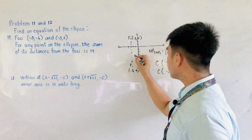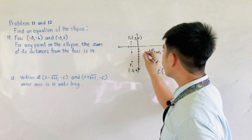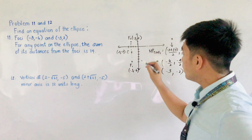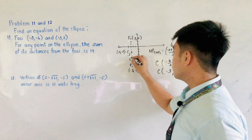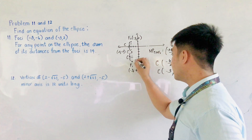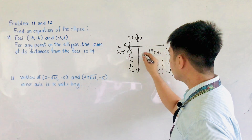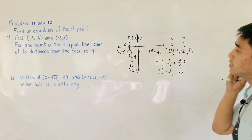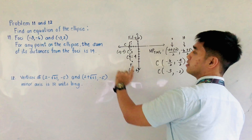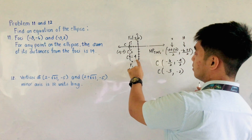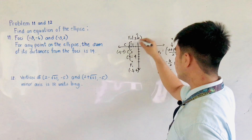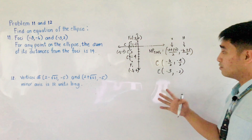The center is at negative 3, negative 2. From the center going to each focus, that distance is C. From the center at negative 3, negative 2, going to F1 at negative 3, negative 6, the distance is 4. So C is equal to 4. Also, F1 and F2 are located on a vertical line, so this is a major vertical axis.